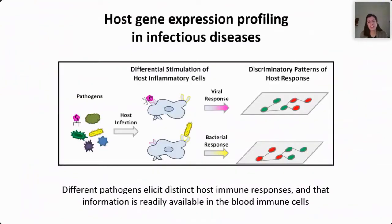In recent years, we and others have been trying to establish a new paradigm shift. Instead of trying to detect the pathogen that may be lying in sites that are not accessible, or in numbers that are very low and not detectable, we've been trying to identify patterns in the blood of patients. We've been looking at genes and the way genes are expressed, and these patterns are so specific and unique that they can allow us to distinguish between causes of disease and infection.